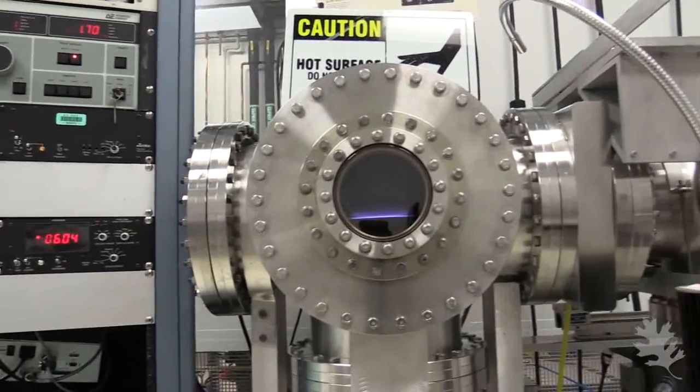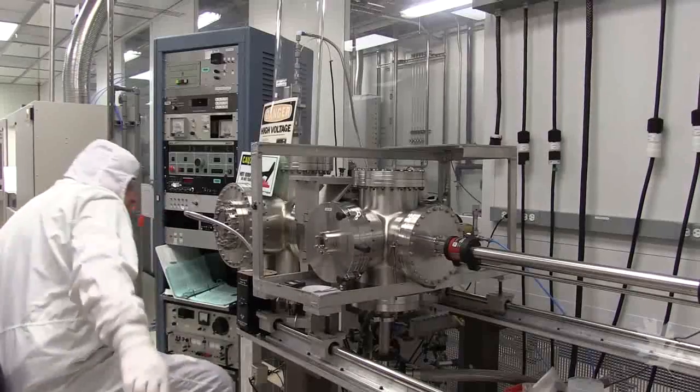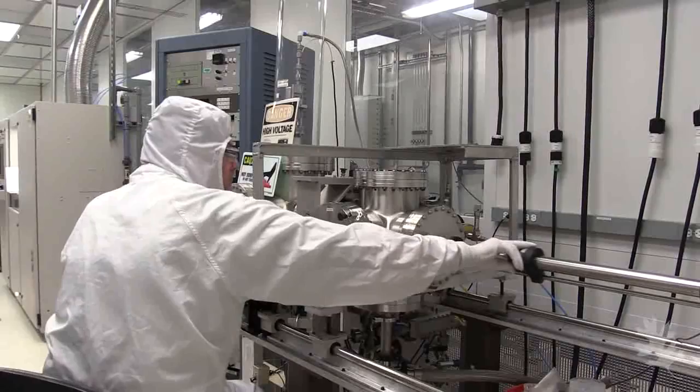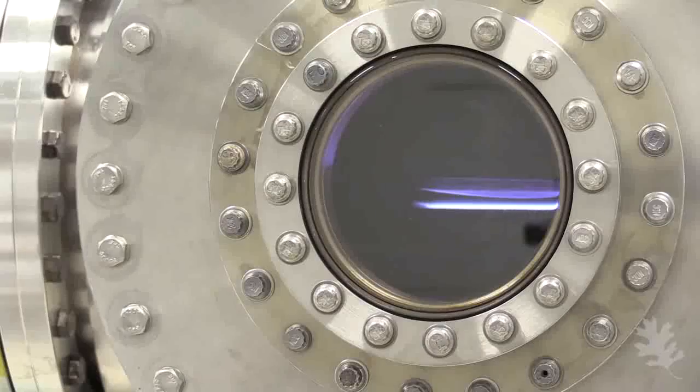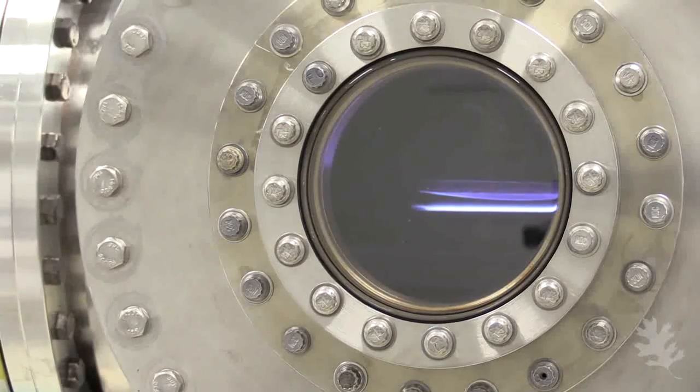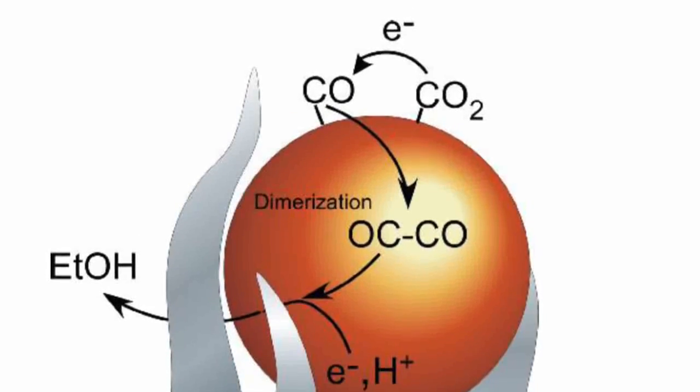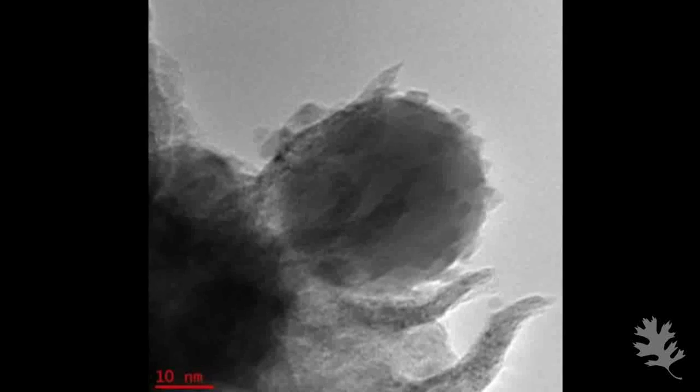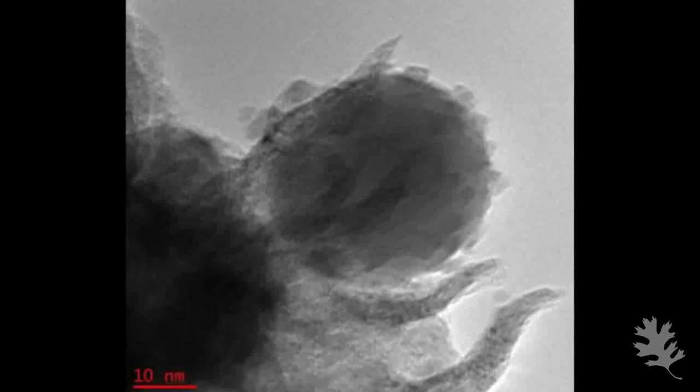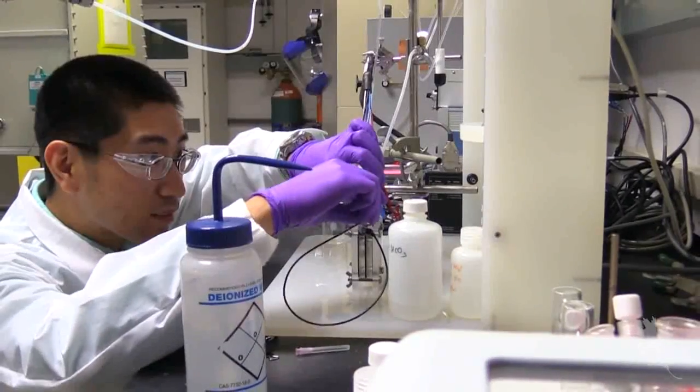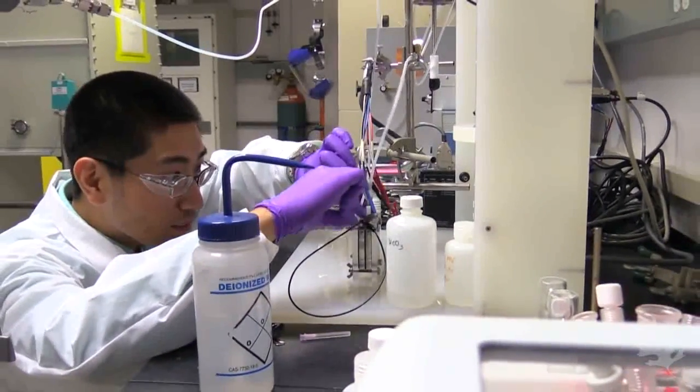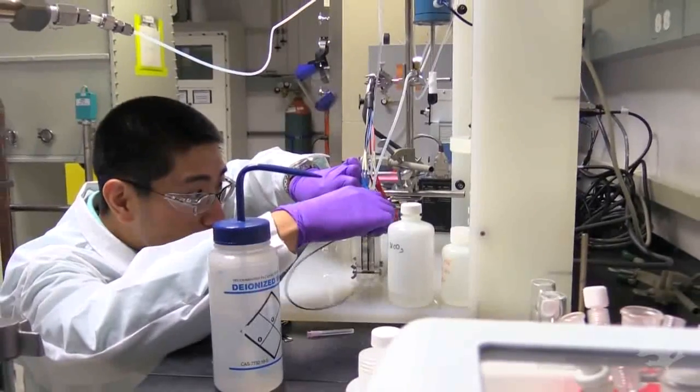We originally started trying to grow a type of catalyst based on a material called graphene. As it turned out, with the equipment we have, we couldn't make graphene, but we could make these little tiny spikes. These little spikes are actually like tiny lightning rods that taper down to a tip that's just a few atoms thick. What that does is it concentrates the electric field right there at the tip and creates a very high electric field that you wouldn't get on a normal flat catalyst.